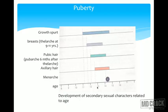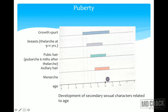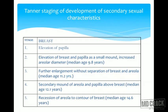Pubertal changes begin with pulsatile GnRH secretion. The sequence is: first, growth spurt; then breast development (thelarche) from 9 to 11 years; then pubic hair development (pubarche) starting about six months after thelarche; then axillary hair development; and finally the first menstrual cycle — menarche.